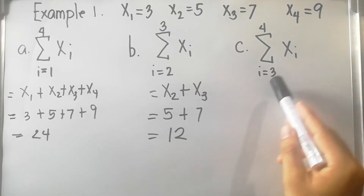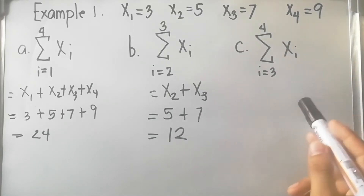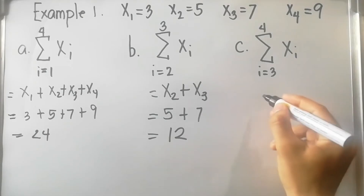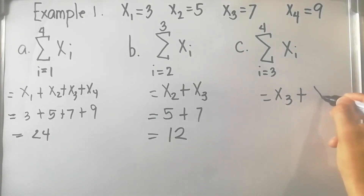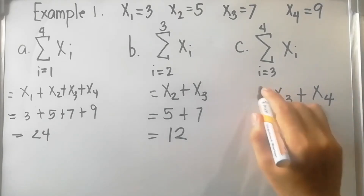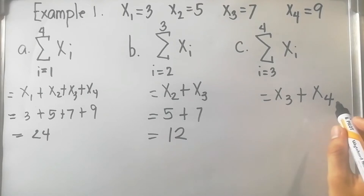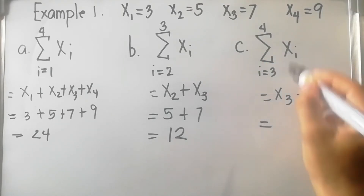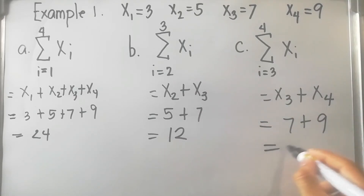For letter c, summation of x sub i where i equals 3 and n equals 4. We start at x sub 3, so that is equal to x sub 3 plus x sub 4, since n equals 4. That is equal to 7 plus 9, which is equal to 16.